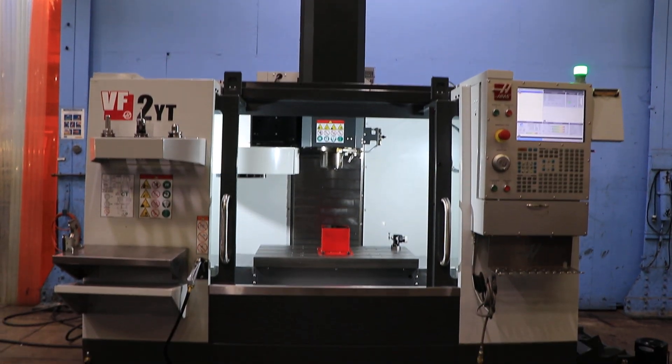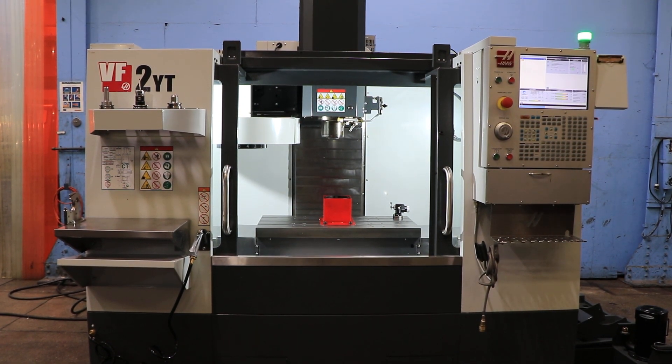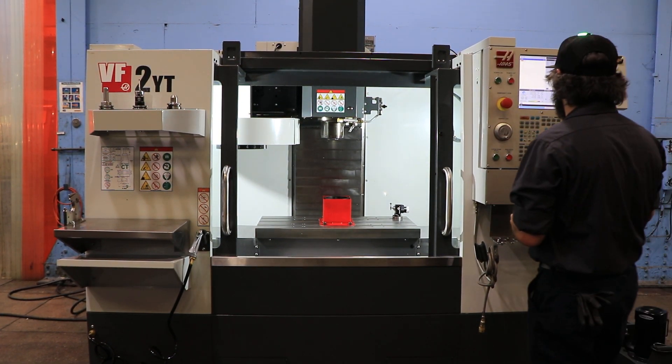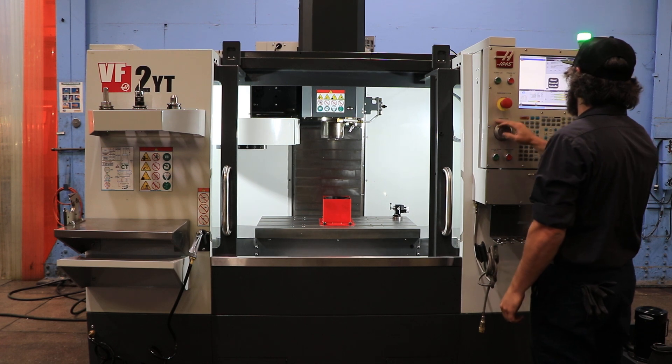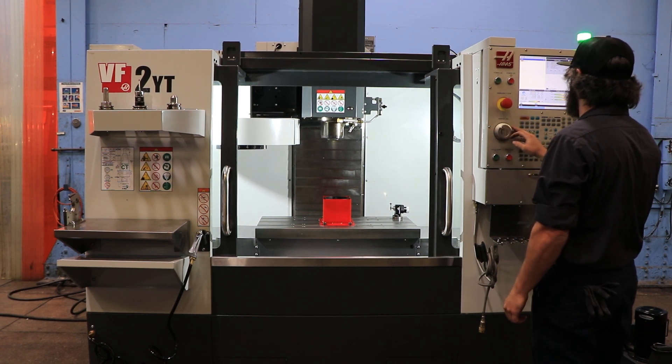Machine has a Haas control, 30 inch X travel, 20 Y, 20 Z, 14 by 36 T slotted table.